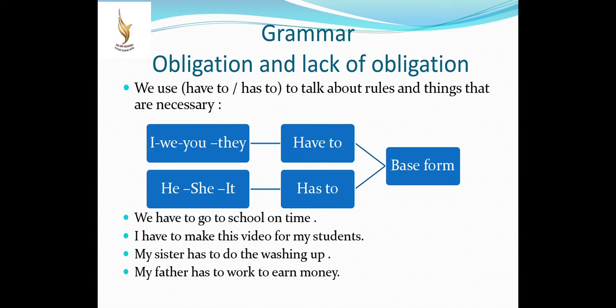Now, it's a grammar part. This grammar is talking about obligation and the lack of obligation. We use have to or has to to talk about rules and things that are necessary. I, we, you, they followed by have to. He, she, it followed by has to. For example, we have to go to school on time. I have to make this video for my students. My sister has to do the washing up. My father has to work to earn money.